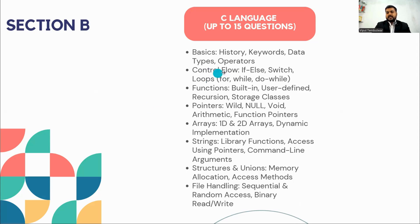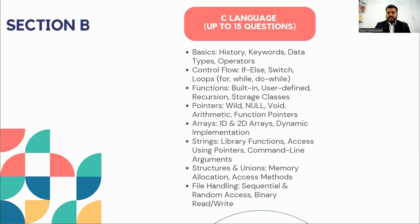Next are control flow statements. In control flow, there are if-else and switch statements — what they are, when to use them, and key scenarios for each. There are also loops: for loop, while loop, and do-while loop. If you need to perform operations repeatedly, you use loops. Most probably, you will get coding questions and code snippet MCQs on for loop.